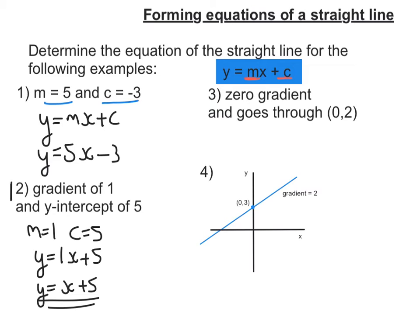OK, on to example 3. We've got zero gradient, so m is equal to 0. And it goes through 0, 2, that's where it crosses the y-axis, so in this case c is 2.